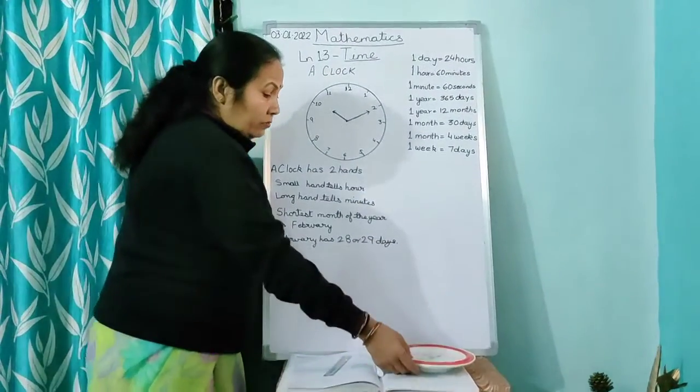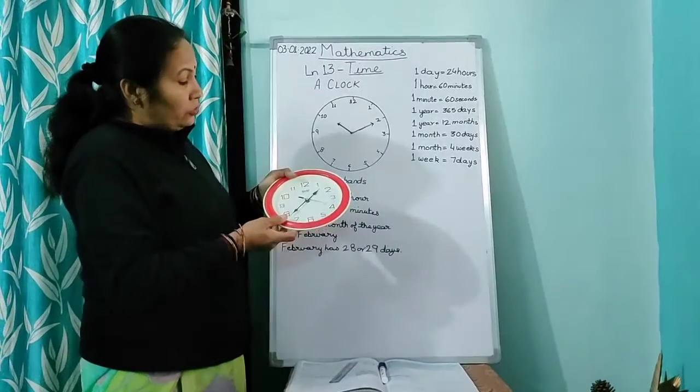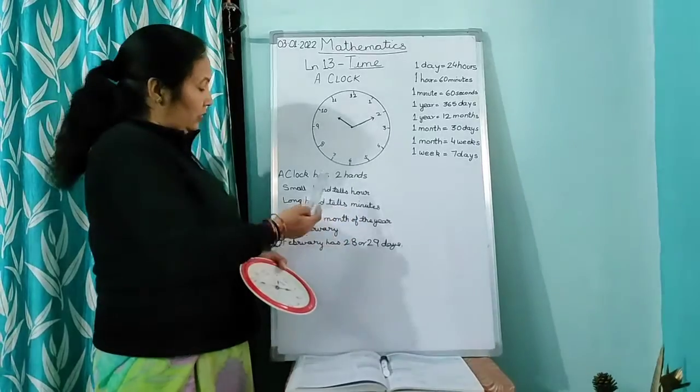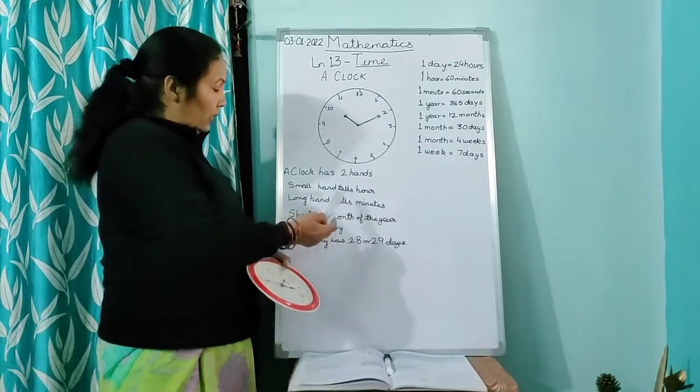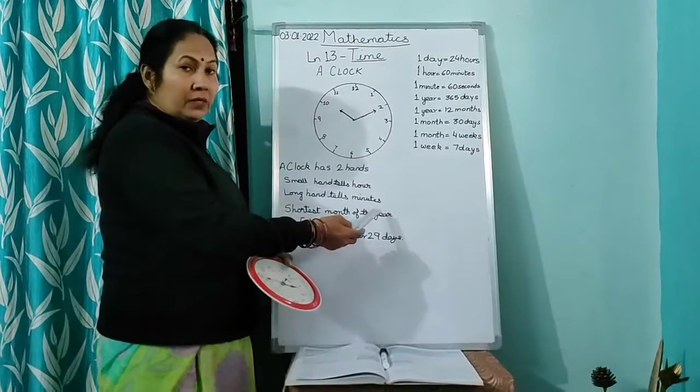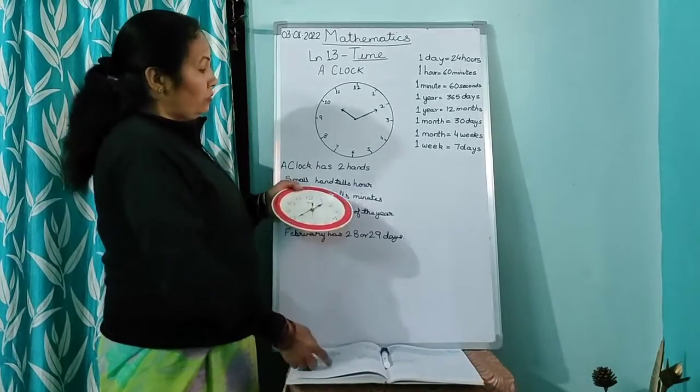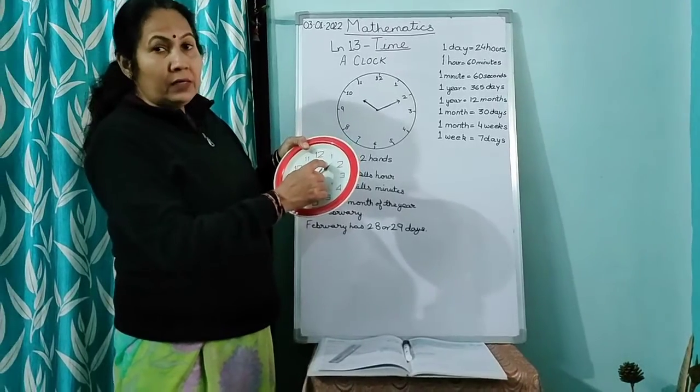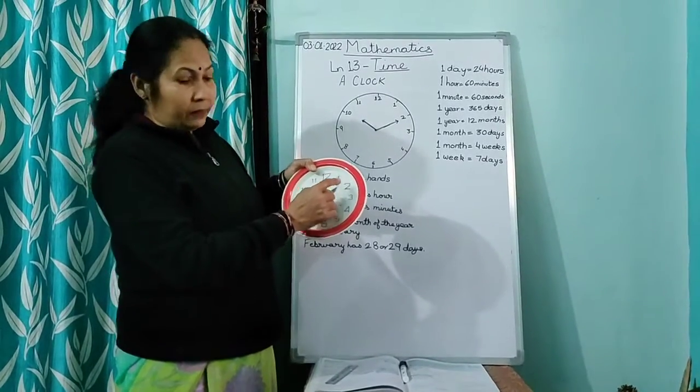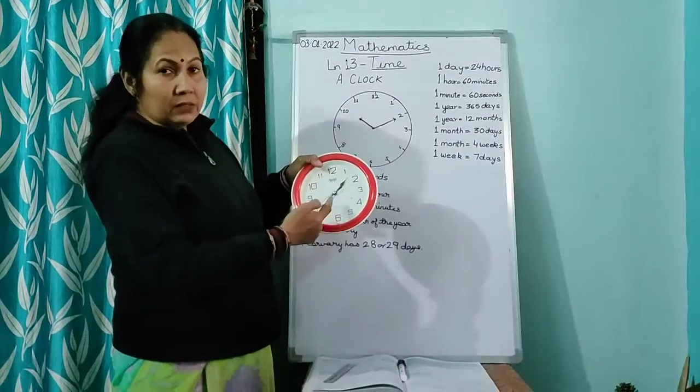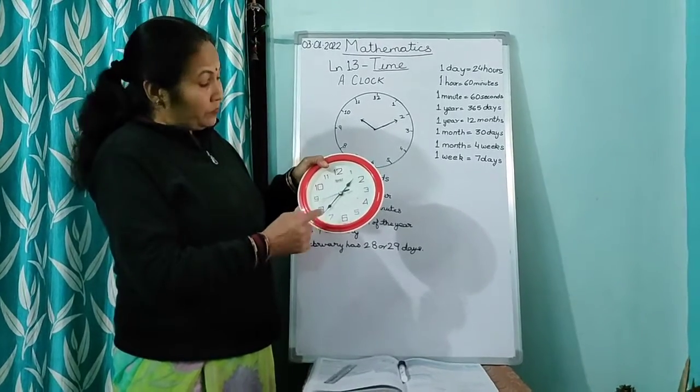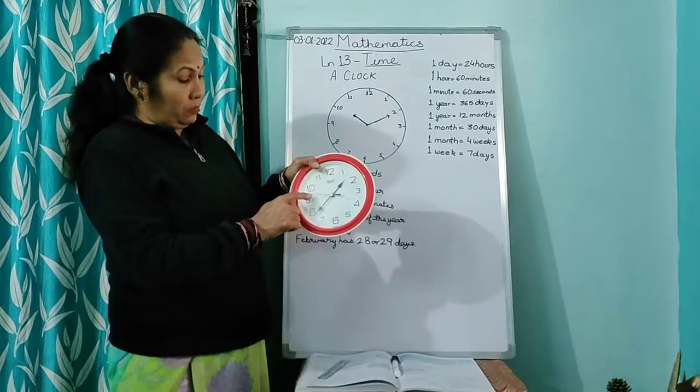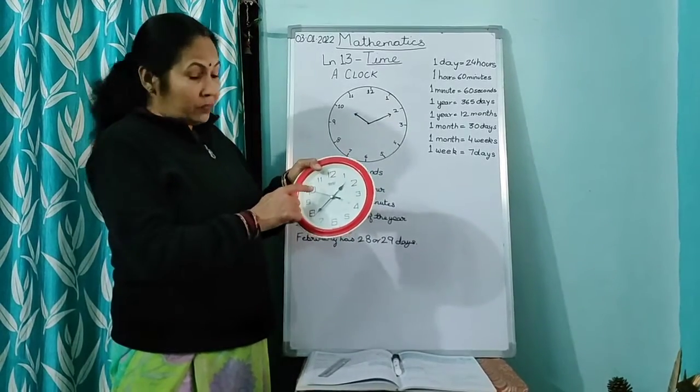Now children, again I will show you the clock. I have written here also that a clock has 2 hands. Small hand tells hour, long hand tells minutes. Now children see, you have 2 hands here. This small one is telling you the hour. And this big one, the long one, is telling you the minutes. And this thin one, this thin needle which is moving, this is seconds.